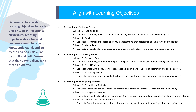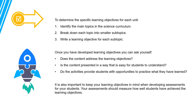These examples demonstrate how the content of the primary science curriculum can be analyzed. The order in which topics and sub-topics are presented, the depth of coverage, and the overall coherence of the material are important considerations in designing an effective learning experience for young students. Actual curriculum materials may vary depending on the educational standards and curriculum guidelines in a particular region. To determine the specific learning objectives for each unit, identify the main topics in the science curriculum, break down each topic into smaller sub-topics, and write a learning objective for each sub-topic.